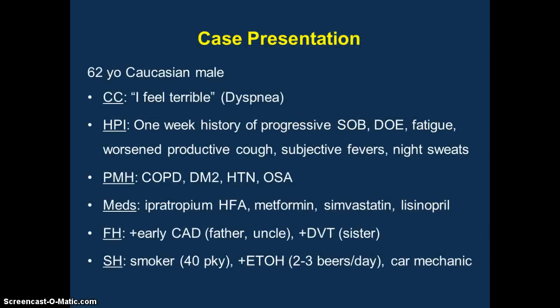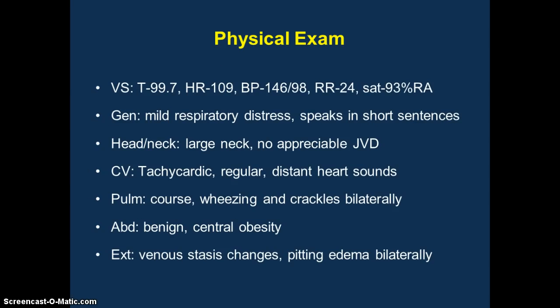Getting started with the case: you have a 62-year-old male who comes into your clinic with a chief complaint of feeling terrible and dyspnea, who has a history that sounds like a COPD exacerbation. He has a history of COPD, but he has some concerning family history for cardiovascular disease and venothromboembolic disease, as well as having a lot of cardiovascular risk factors. When you look at him on physical exam, there's nothing that's terribly pointing you one way or the other as far as cardiac versus pulmonary — could be both.